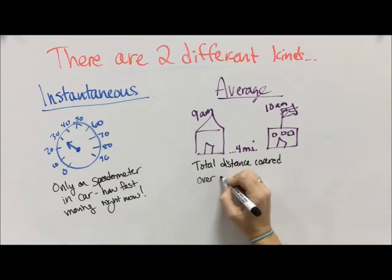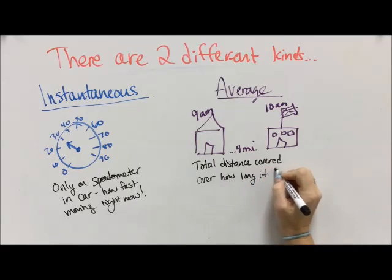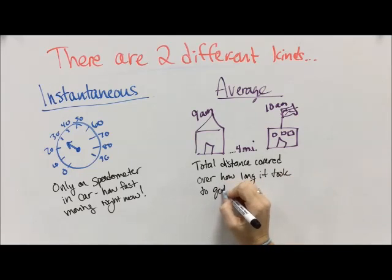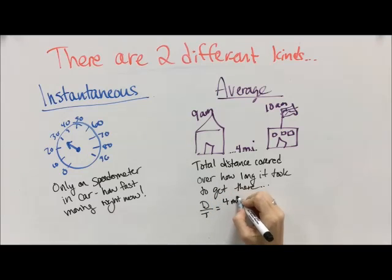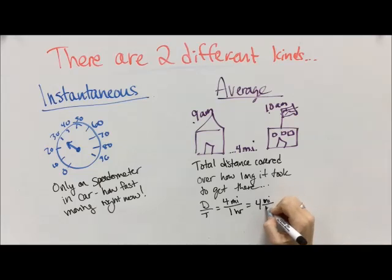So now we know how long it took you and your total distance covered. So total distance covered was four miles, and how long it took you to get there, your time, is one hour. So we can take your distance and divide it by your time, which, 10 minus 9 is one.